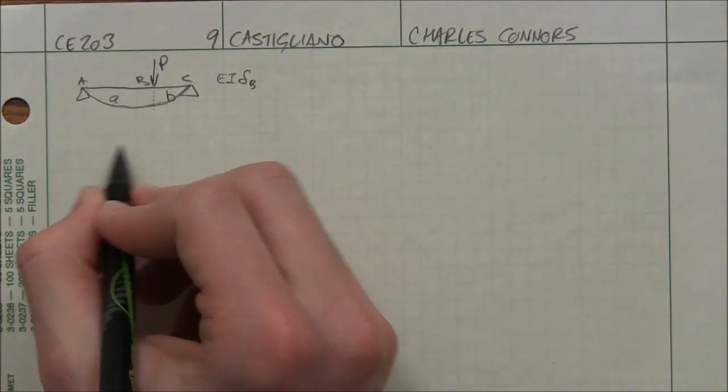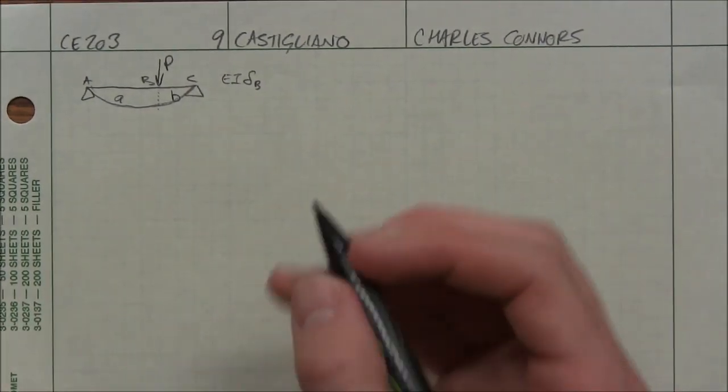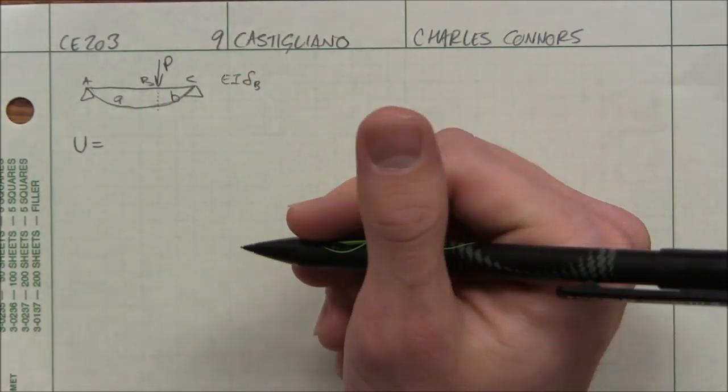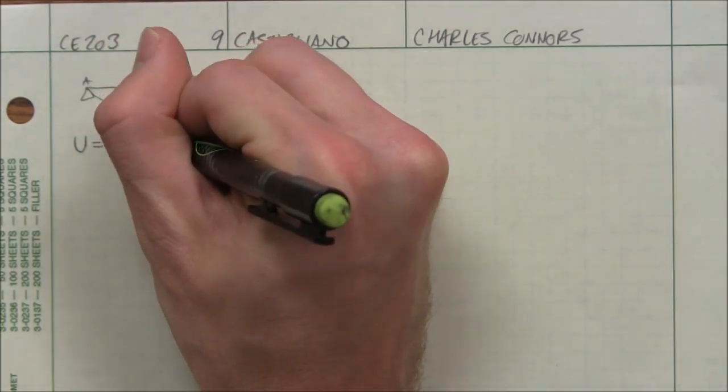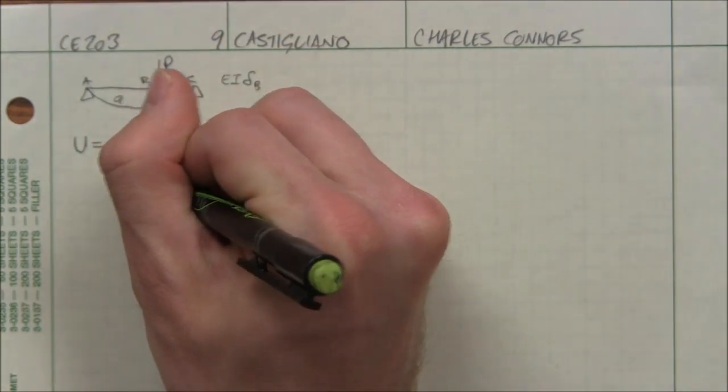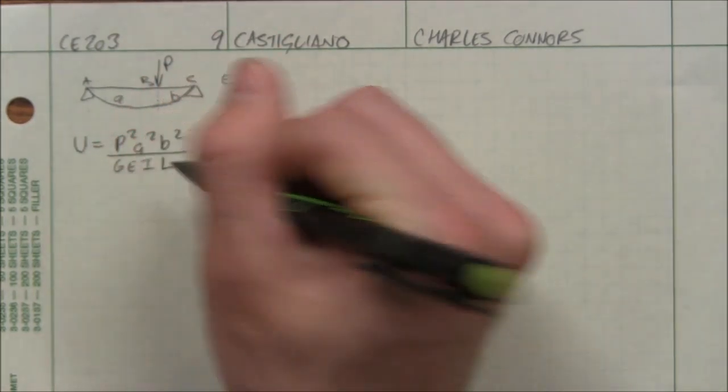All right, so we can skip all the statics and the strain energy. From the last problem, we got that the strain energy of this beam was P squared, A squared, B squared, divided by 6EIL.